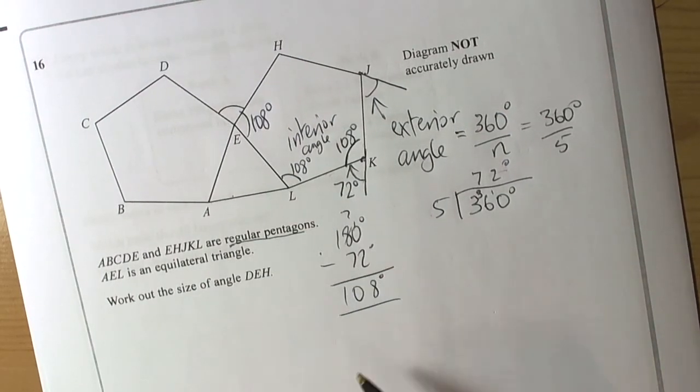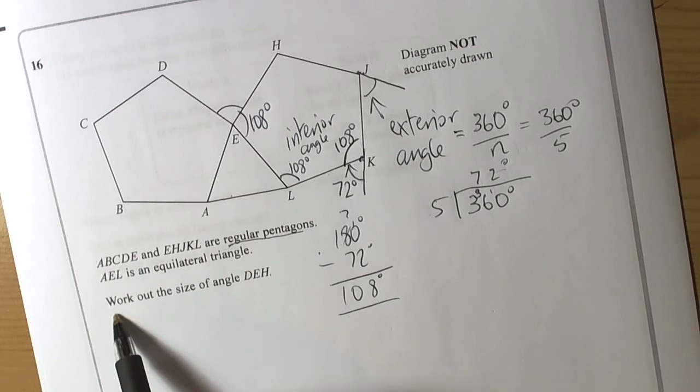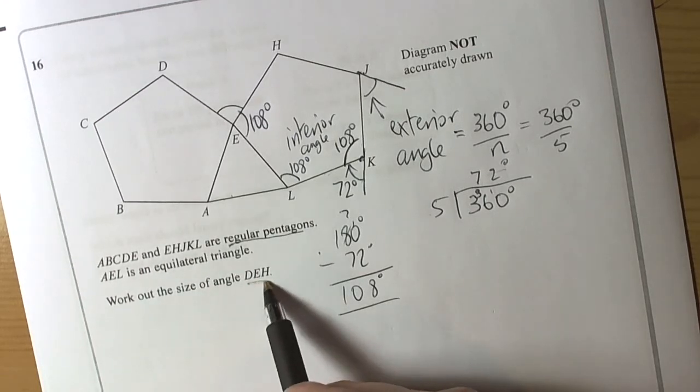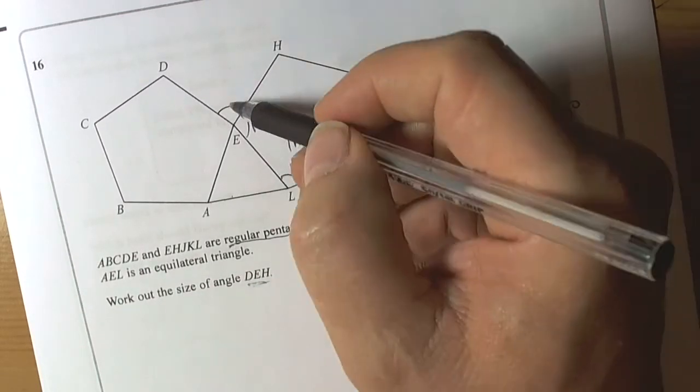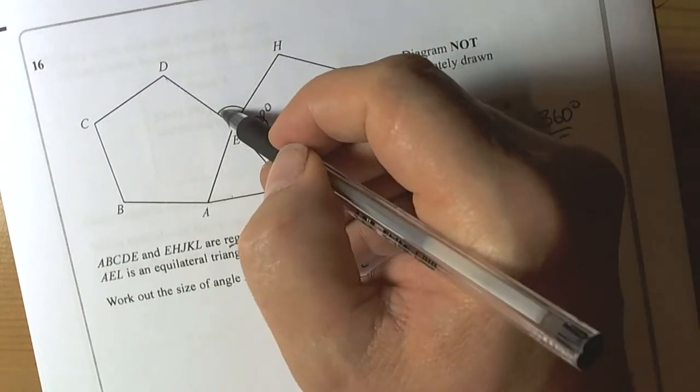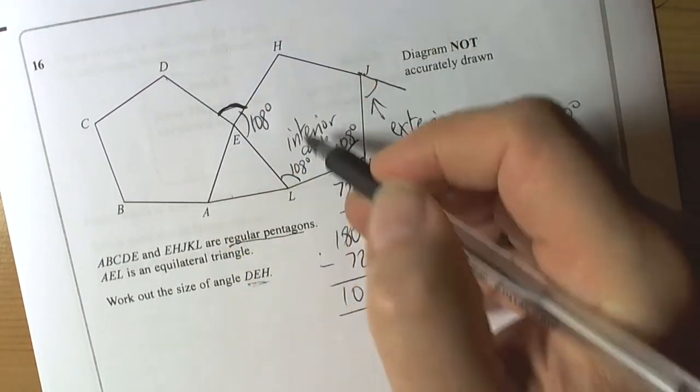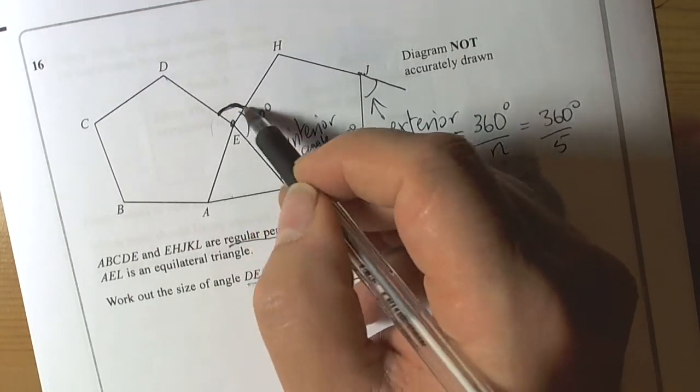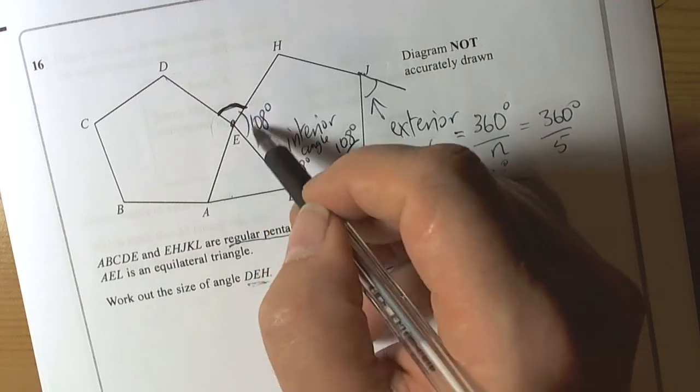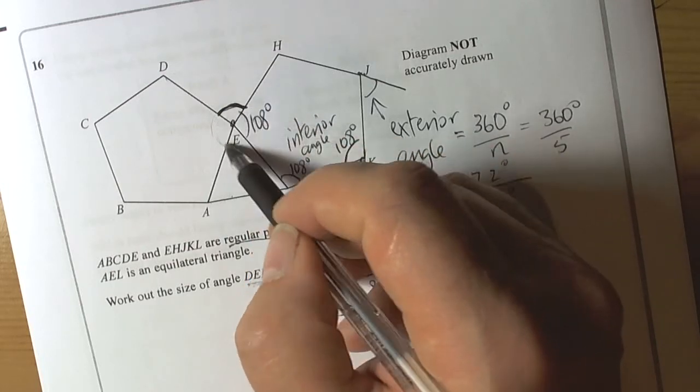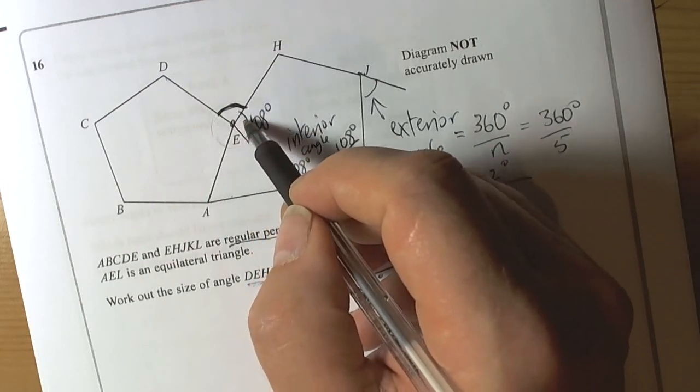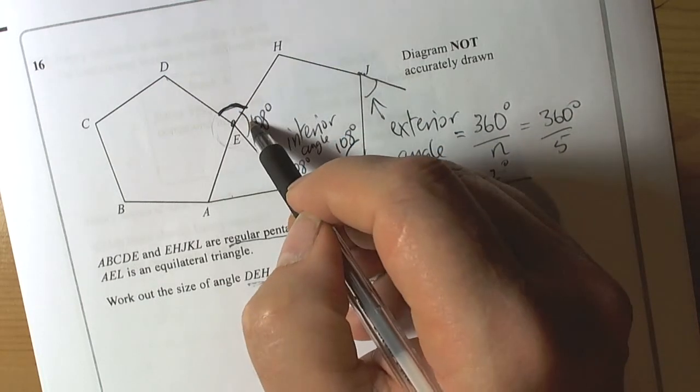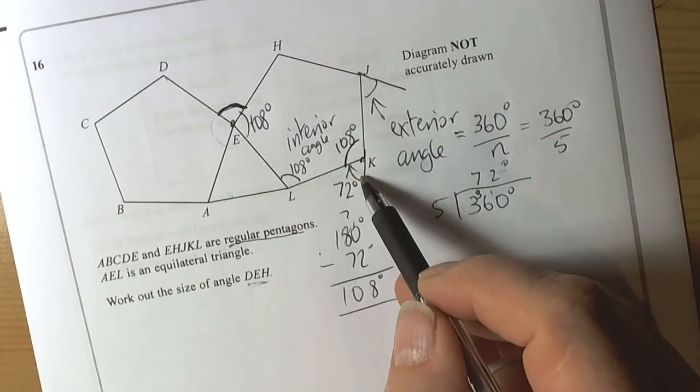Now we can go to the actual question and see what it actually wants. It's asking us to work out the size of the angle DEH. So DEH is this angle here. It looks like we've got a point here, and if we could work out all the angles around there, we've got a rule that says the angles around the point add up to 360 degrees. We know that one's 108, because we've done the work with the polygon.